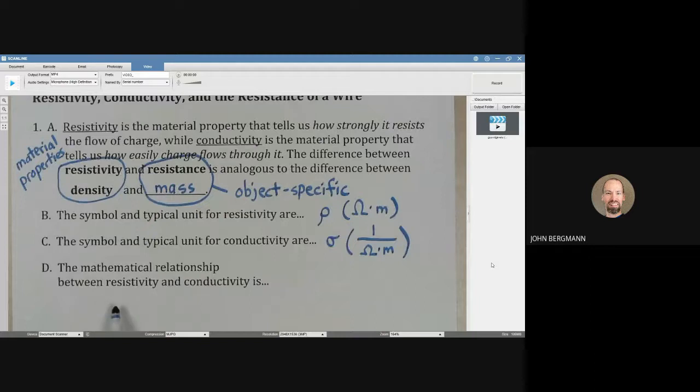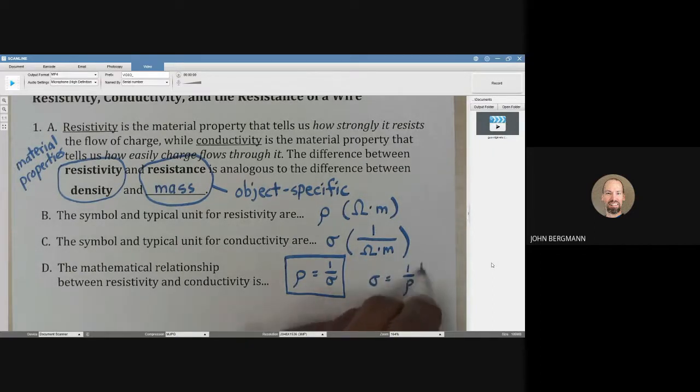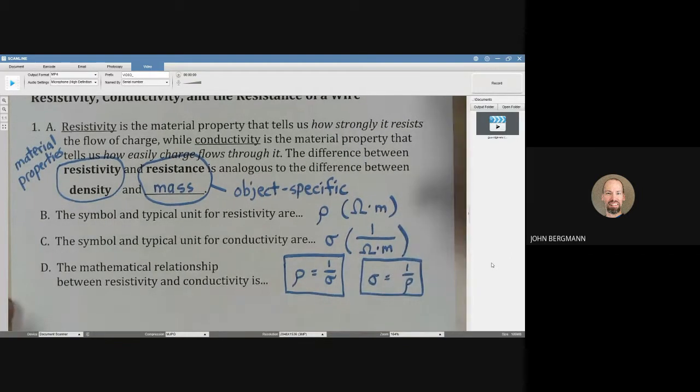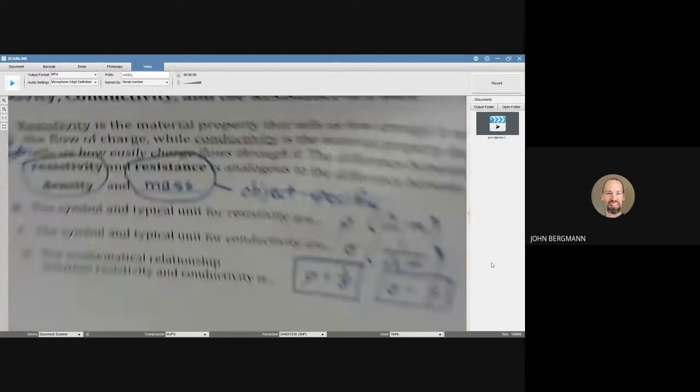The mathematical relationship between resistivity and conductivity, they are inverses of each other. You can see we wrote above that the units are inverses of each other, and so obviously we could write sigma is one over rho as well. Resistivity and conductivity, they are reciprocals of each other.